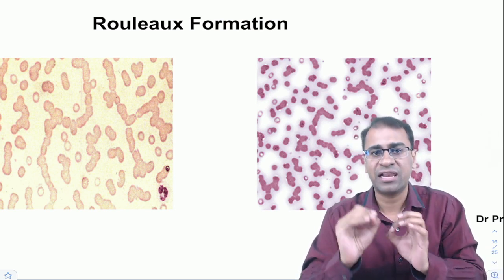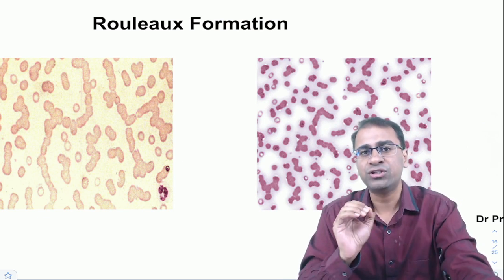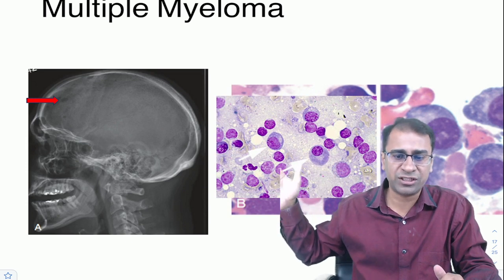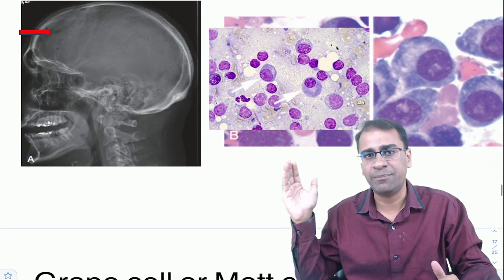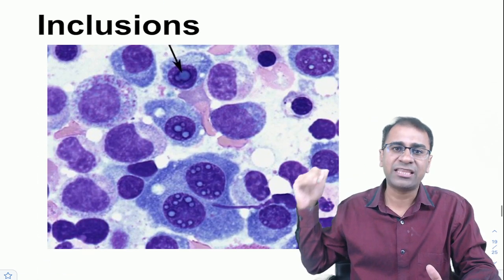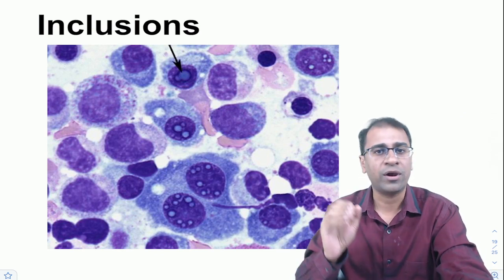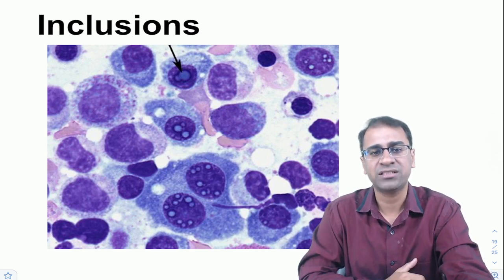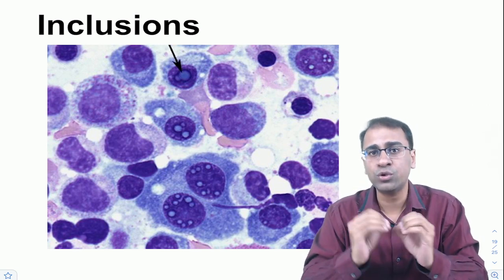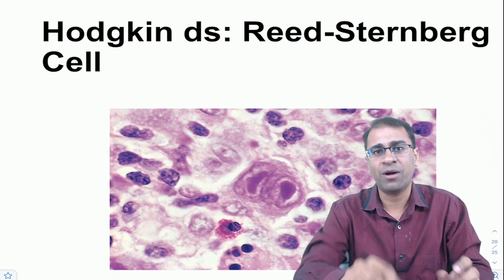Alkaline phosphatase level is normal in multiple myeloma. Its counterpart, Waldenström's macroglobulinemia, shows high IgM. The most common antibody in myeloma is IgG — remember the mnemonic GAMDE in decreasing order. On biopsy, the eccentric nucleus is characteristic; cells show Mott cells and grape cells. Intranuclear inclusions are Dutcher bodies; intracytoplasmic inclusions are Russell bodies. Treatment is bortezomib, a proteasome pathway inhibitor.